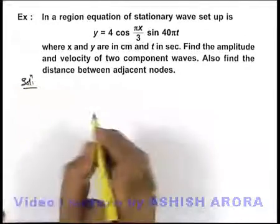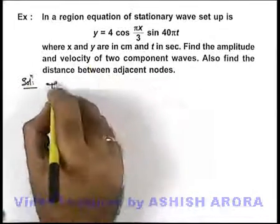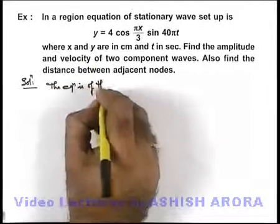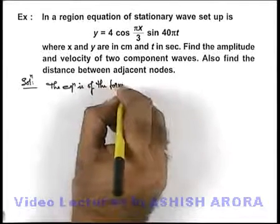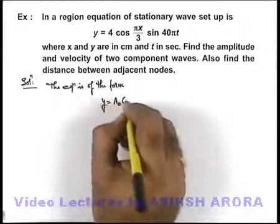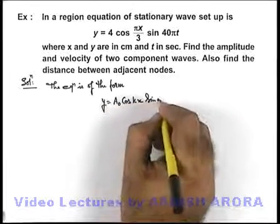Now in this situation, if we have a look at the equation, the given equation is of the form which we already studied: y = A₀ cos(kx) sin(ωt).